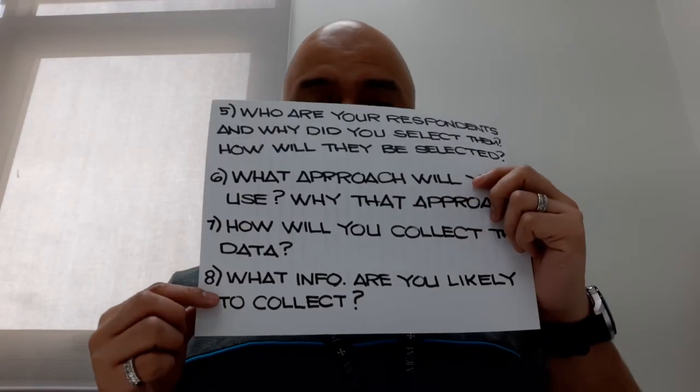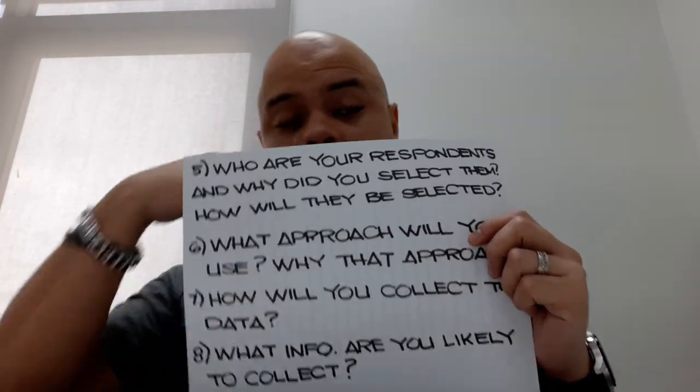Number eight: what information are you likely to collect, or what data are you expecting to get from your participants? These have to be articulated because if your data does not match your research questions, then the data may have to be changed or the process of collecting the data might be changed. So the nature of the data plus research questions — they have to match.